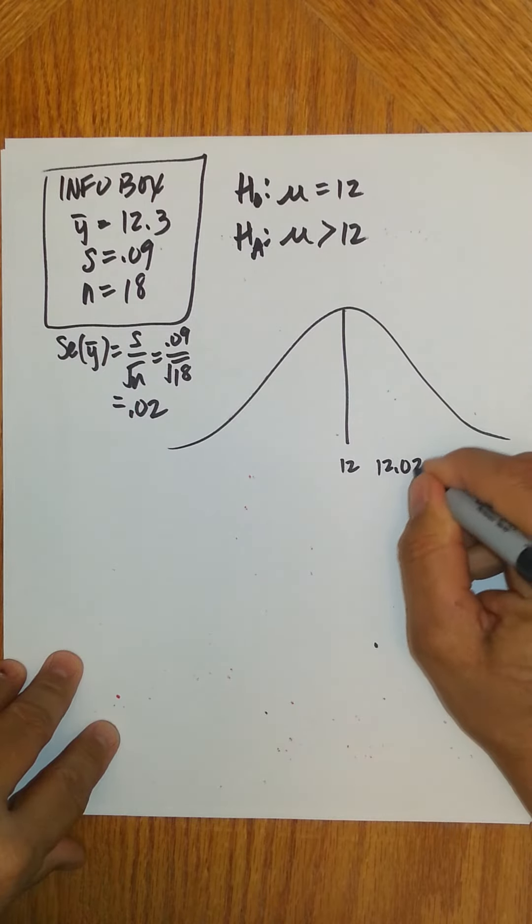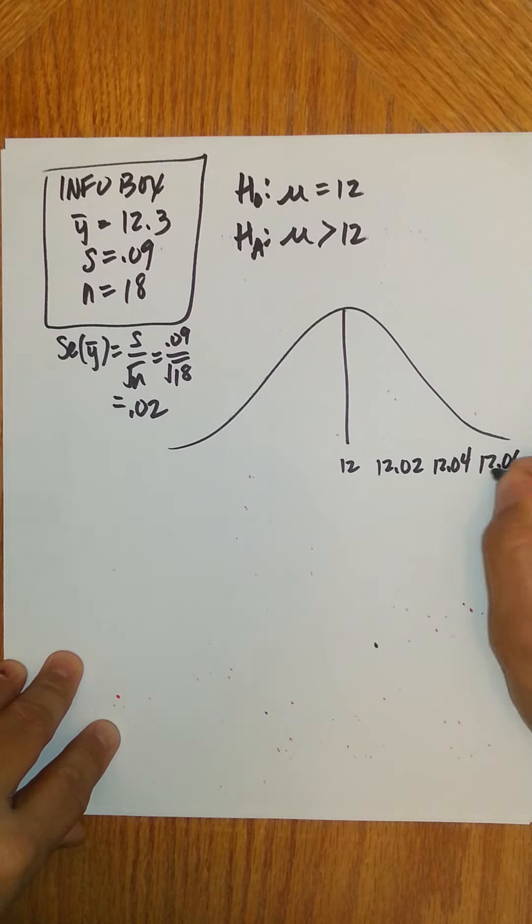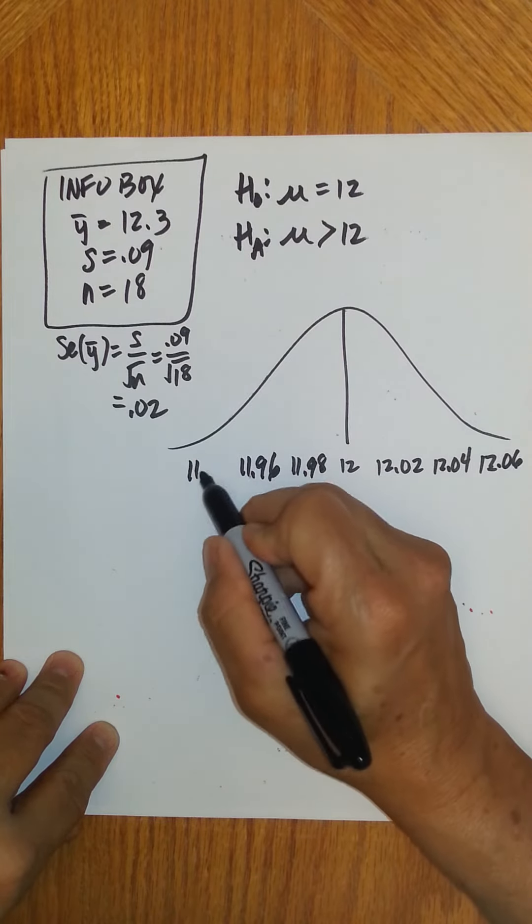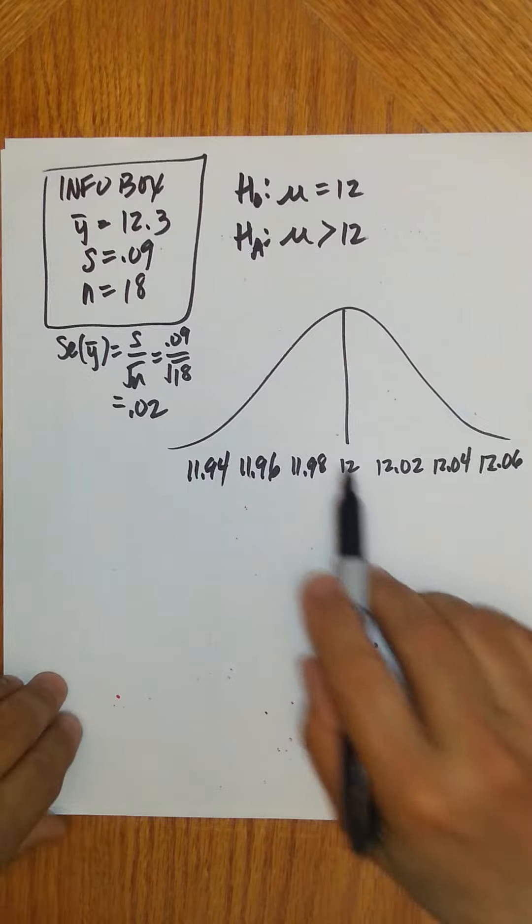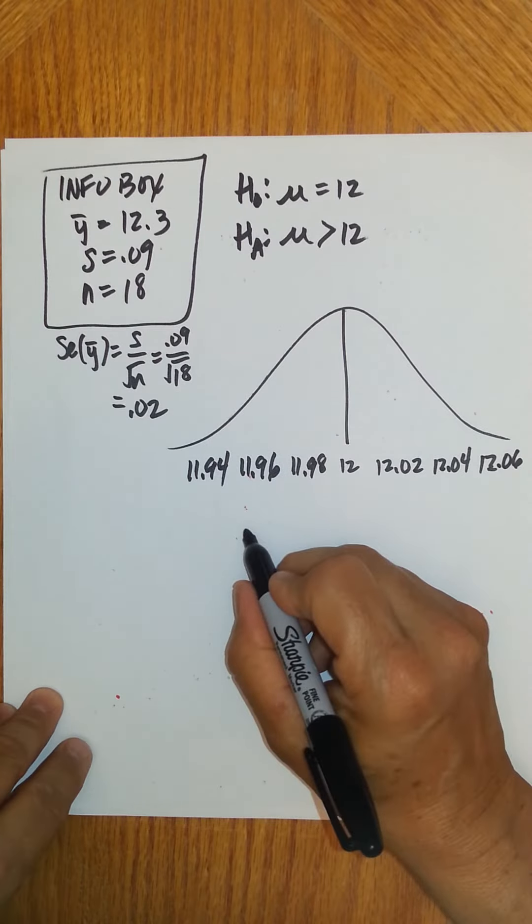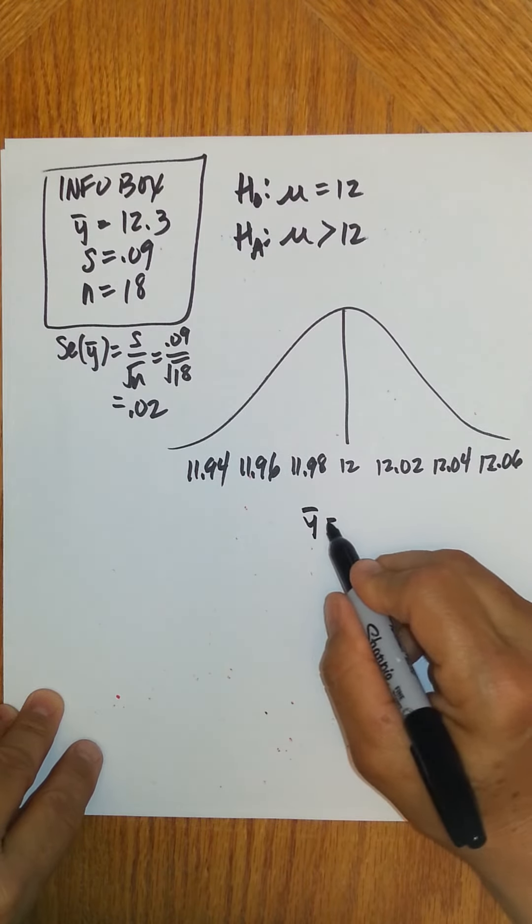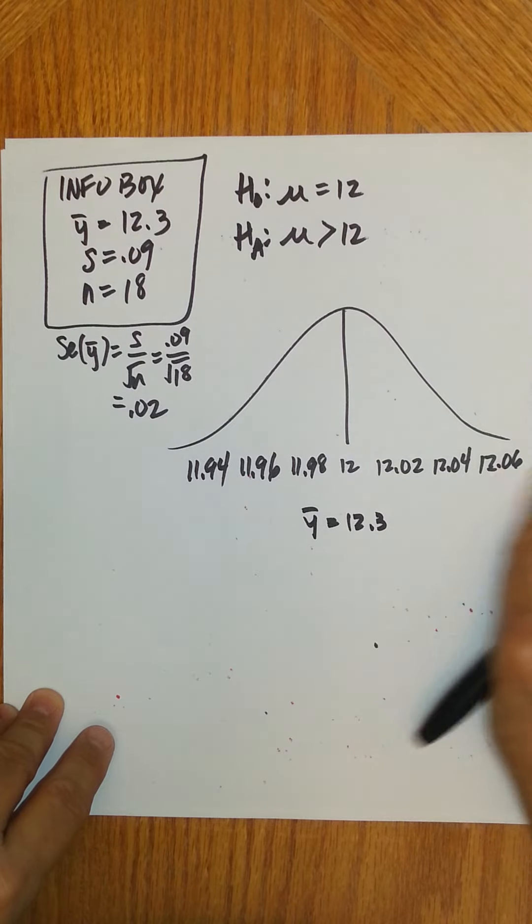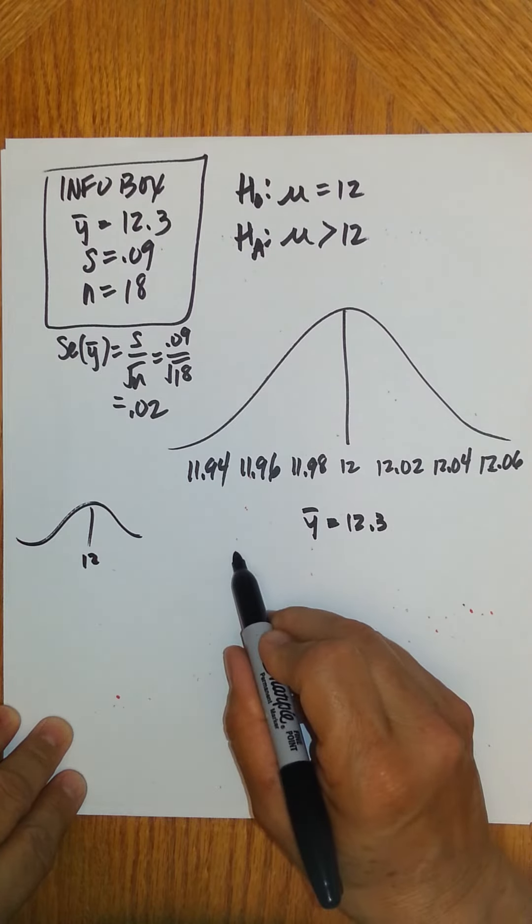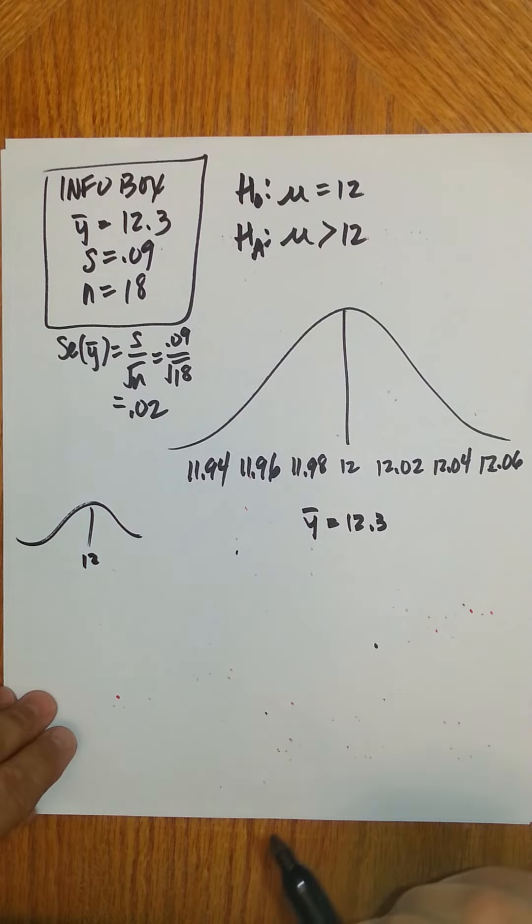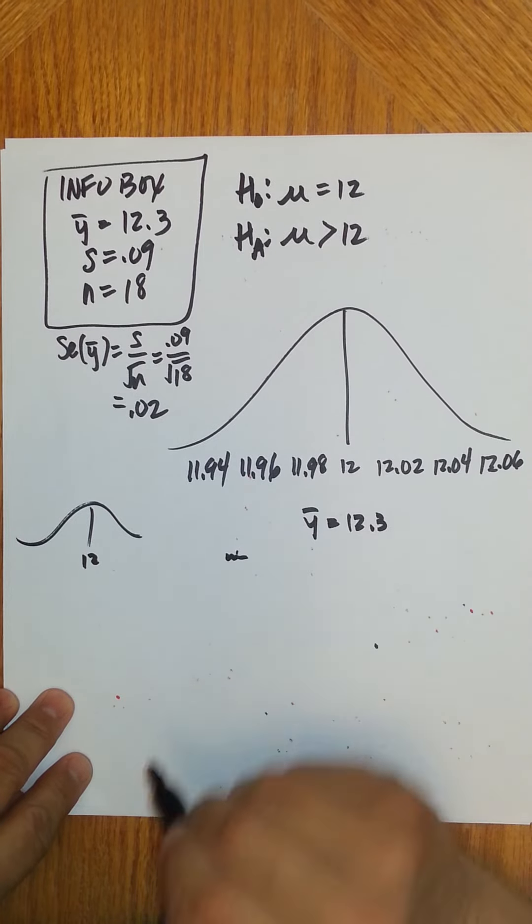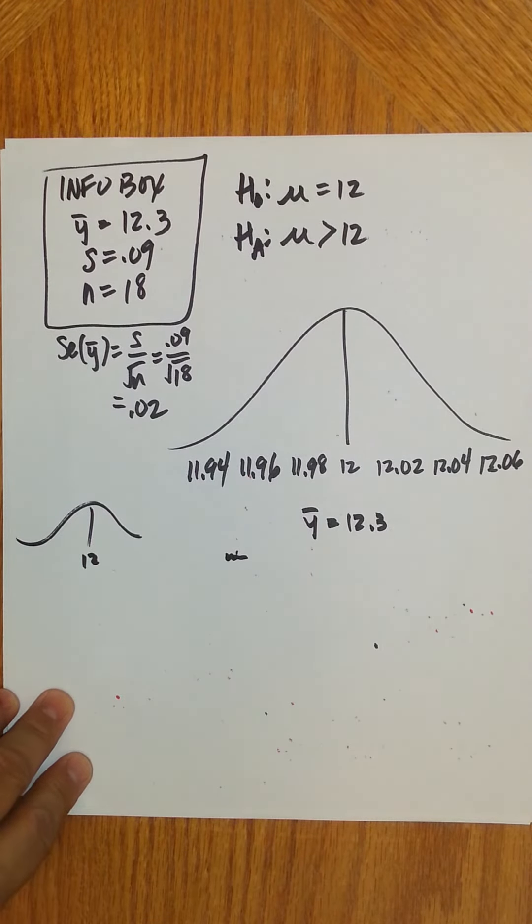I would have 12.02, 12.04, 12.06. And over here, 11.98, 11.96, 11.94. And then I test this with a sample. The sample is 12.3. We say, where's my sample? Y bar is 12.3. Well, technically, it's way out here. It's so far off the mean or the distribution. If here's 12, and I'm out here at 12.06, 12.3 would be somewhere way out here. I can't even really draw it on there. And theoretically, I would shade to the right because of the direction of the inequality in my alternative. I would shade this way.